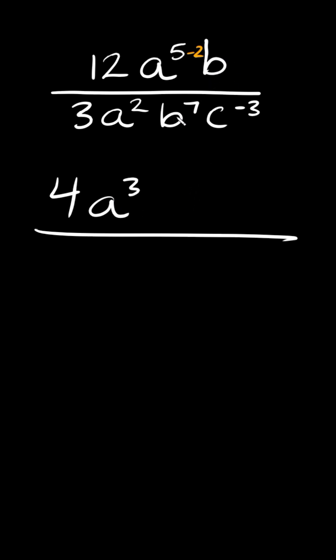Now here we have b over b to the seventh. This b doesn't have an exponent so you can assume there's a 1. So then here we would do 1 minus 7 which is equal to negative 6. So then we have b to the negative 6.